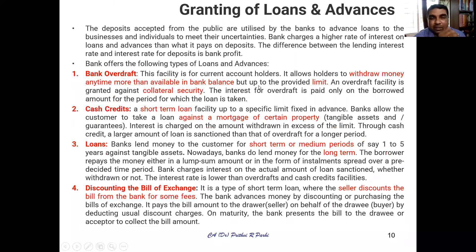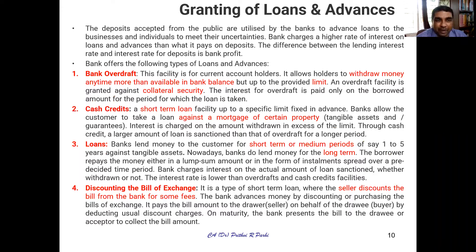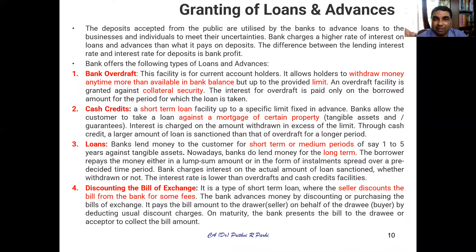Now let us move to the second type of primary function: granting of loans and advances. Banks provide loans and advances through various products — bank overdraft, cash credit, term loans, and discounting of bills of exchange. For bank overdraft: the customer is allowed to withdraw money any time above the available balance, but within an approved limit. When the customer needs money and doesn't have enough in his account, the customer can enjoy this overdraft facility.